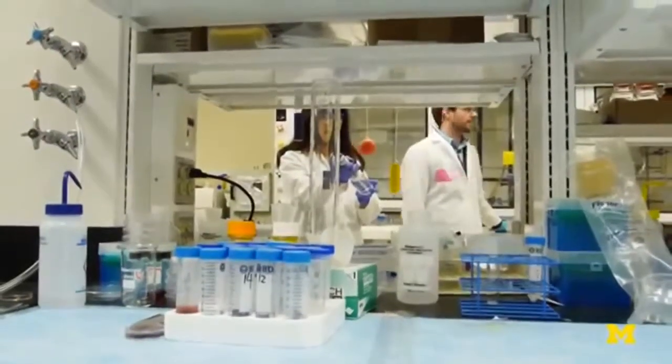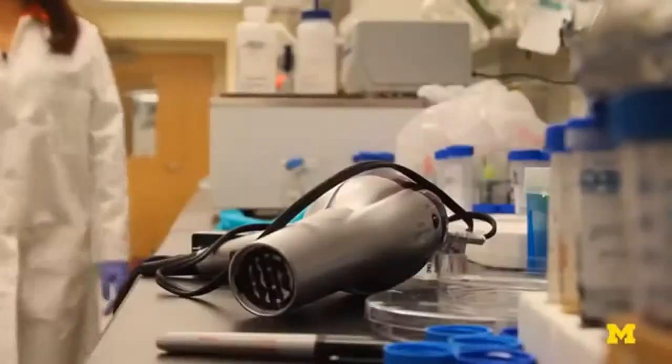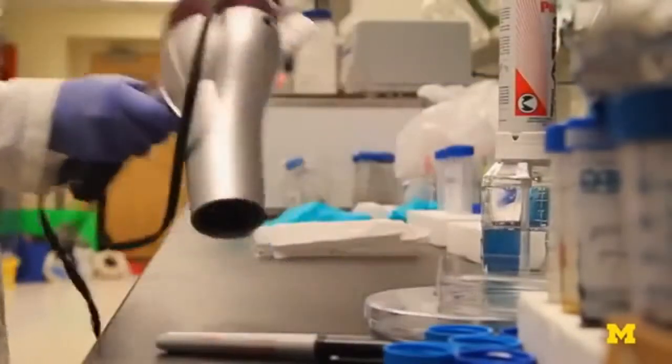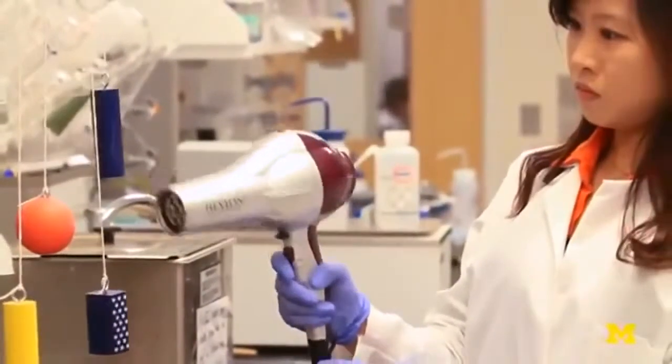Of course, it takes a while for the students to get the technique down. If things don't dry evenly, that adds to the distortion of the light. So we just chose to use a simple hair dryer, and it also speeds things up for the demonstration.